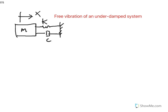This would be a system that is underdamped. The differential equation of a system like this would be mass times acceleration — mx double-dot — plus c times x-dot, that's the force of the damper, plus k times x, that's the force of the spring, and equals zero. So this is a homogeneous second-order differential equation.